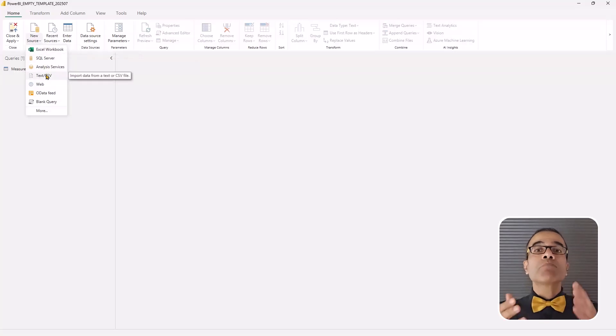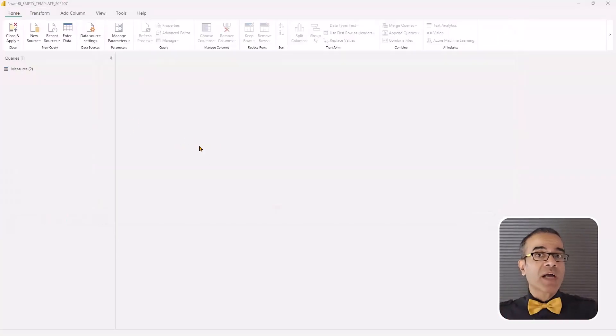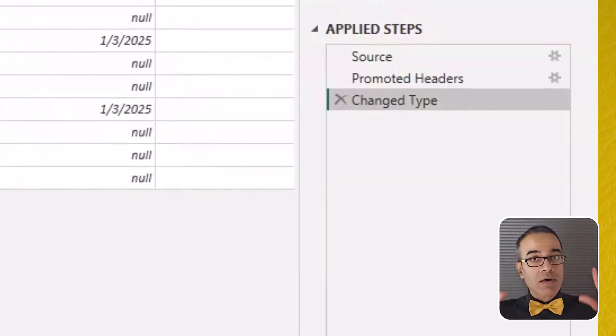But watch what happens when I bring it into Power BI. So I connect to this file, and Power BI does its thing. And what do I see? It has these automatic steps, including our lovely friend, the change type step.